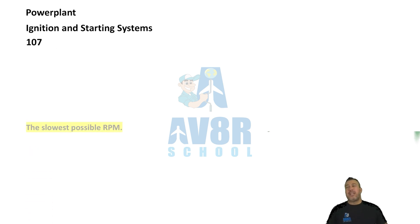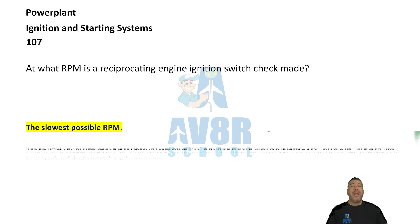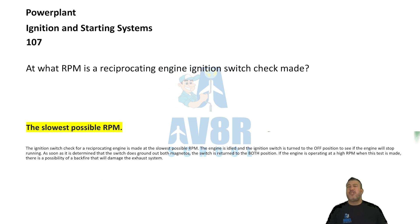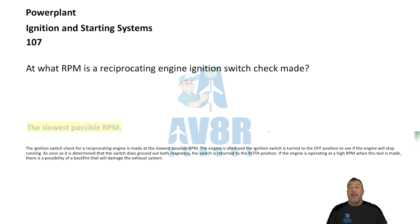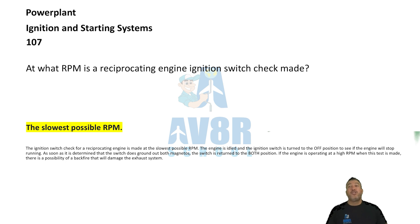Number 107. At what RPM is a reciprocating engine ignition switch check made? The answer is the slowest possible RPM. A reciprocating engine ignition switch check should be made at the lowest possible RPM.